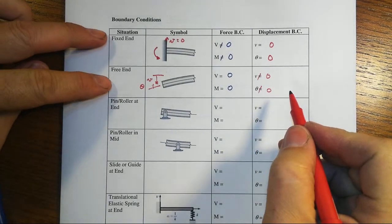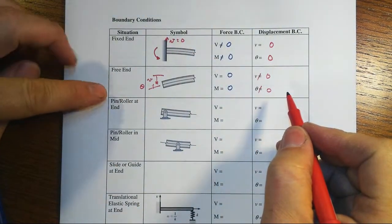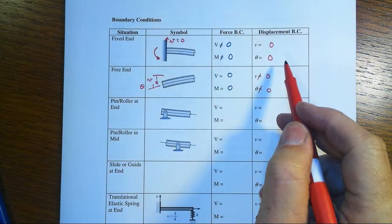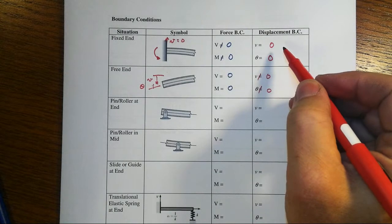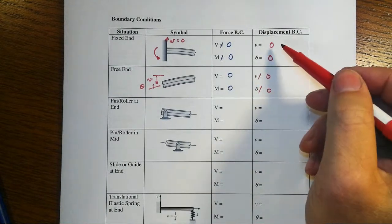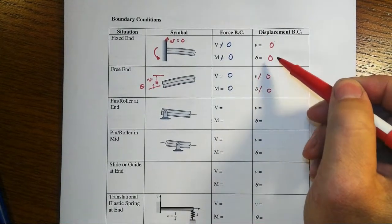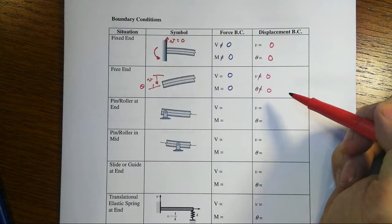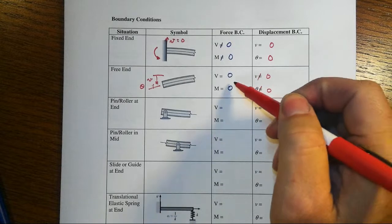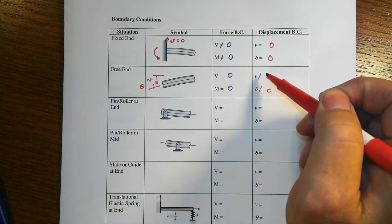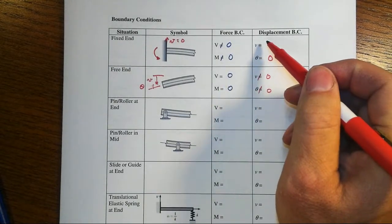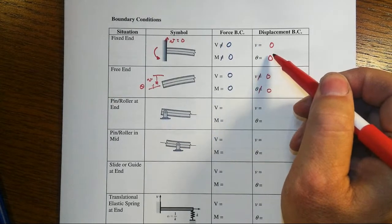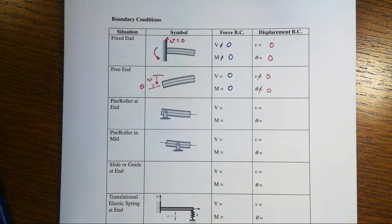Now these are the two most common end conditions that we might have, maybe followed by the pin roller end. When you get into doing computer modeling, what you're going to find out is that when you specify where your supports are at, you're going to be specifying which displacements are zero and that the default will probably be that they're not zero. So this case right here would be the default situation in most typical computer programs. And if you have a support, you have to go tell it which displacements at that location are zero. And it will handle the rest for you.